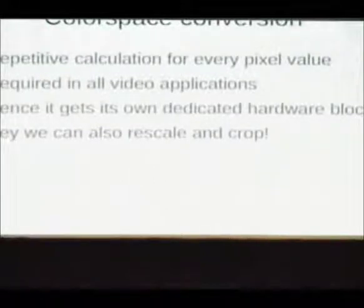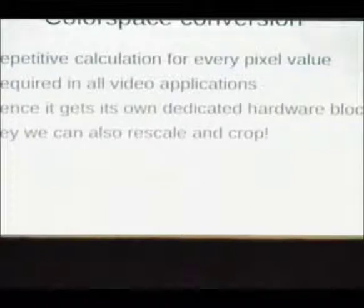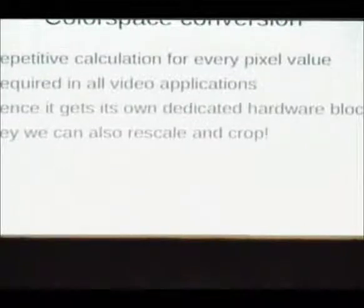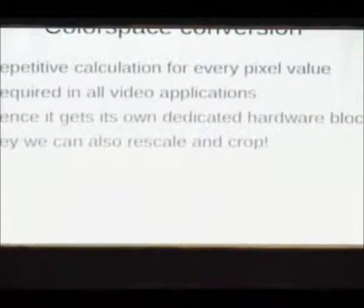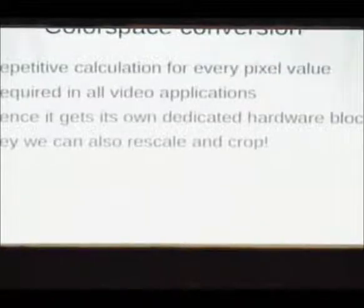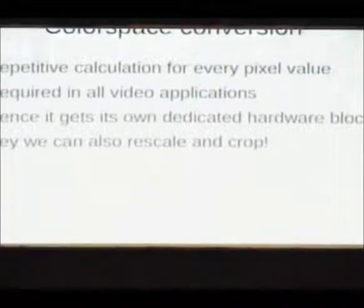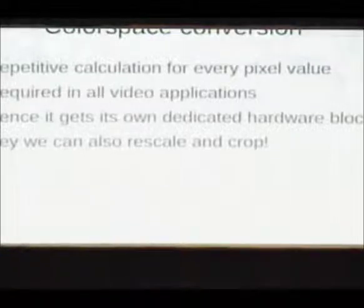The point is that color space conversion is a very repetitive calculation — you do the same linear math for every single pixel in the image. We need to do this for all video applications. Anytime you're encoding video you're getting input data in some color space off the camera. If you're encoding to MPEG-4 or Theora you need to convert to YUV 420. If you're decoding and displaying, you need to convert back to RGB. These are expensive operations, so we give it a dedicated hardware block that also handles scaling and cropping.